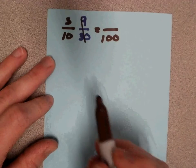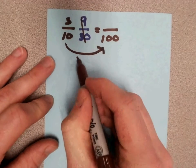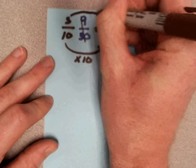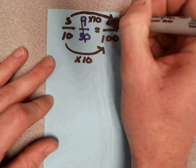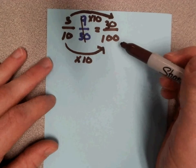So I'm done with this one. Now I can get from 10 to 100. 10 times 10 is 100. So 3 times 10 will give me 30. Now the top number is 30. The bottom number is 100.